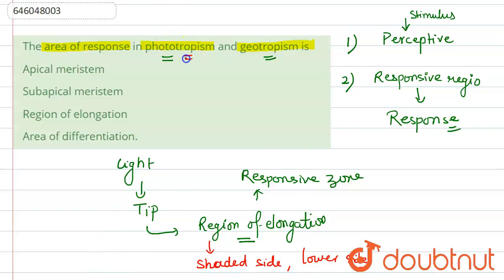for phototropism and geotropism, the area of response is the region of elongation. The correct answer is option C.